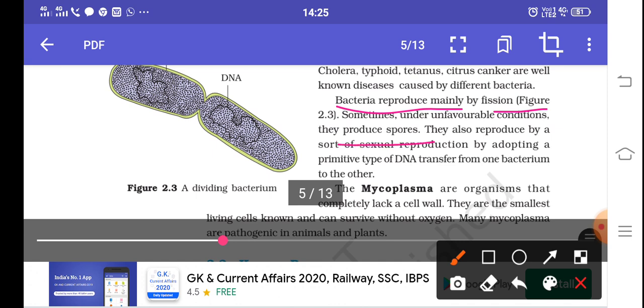In unfavorable conditions, they produce spores in asexual reproduction. In sexual reproduction, they adopt a primitive type of DNA transfer from one bacterium to another. In both modes they can reproduce asexually and sexually.